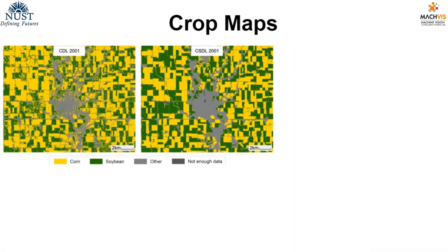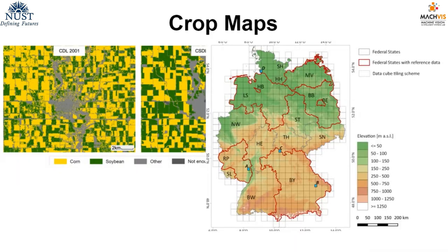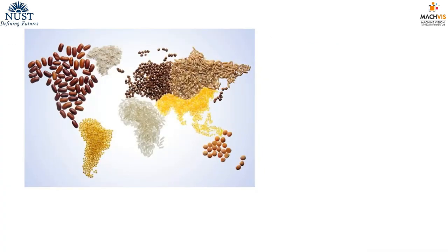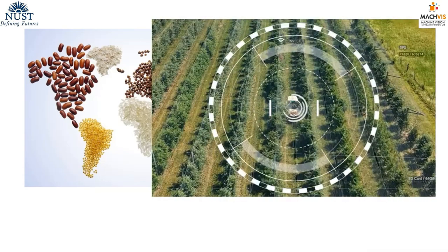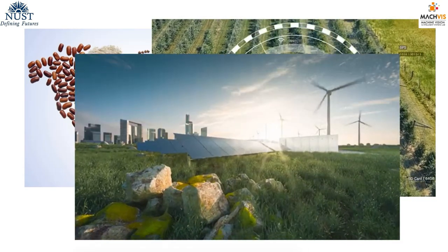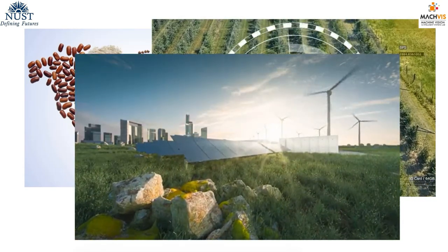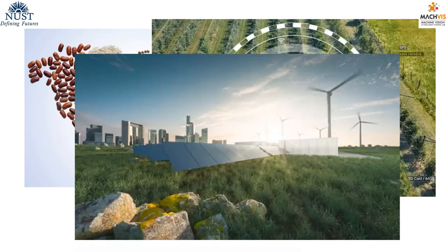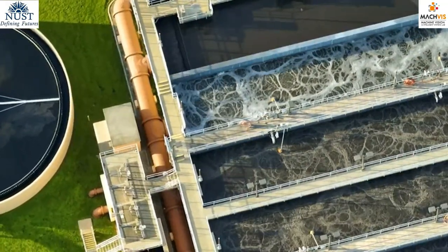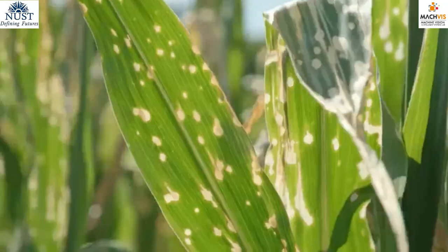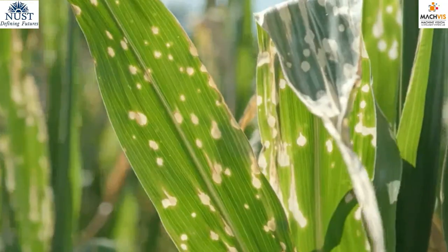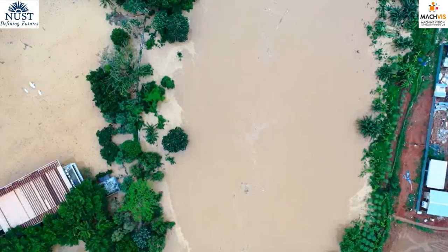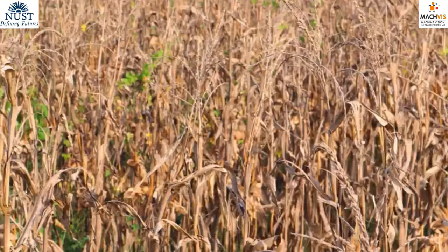These crop maps can then help the government, policy makers, and farmers to ensure food security, optimize the yield of crops, and conserve resources by making data-driven decisions. These decisions can include efficient water resource allocation, early detection of pest infestation, and response to natural disasters like floods and droughts.